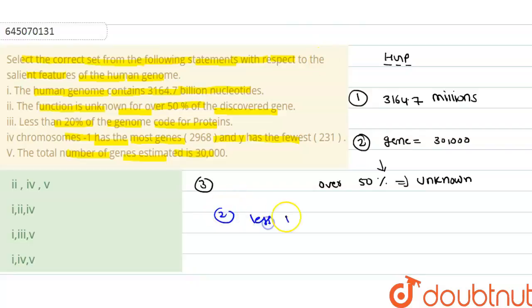And less than 2 percent—this is not 20, this is 2 percent—code for protein.